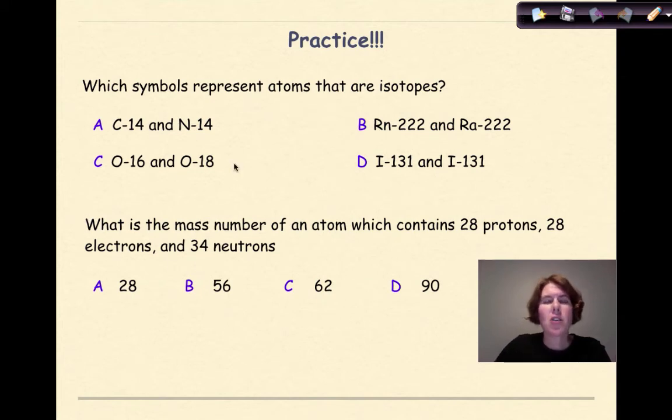Welcome back. Let's go over these two examples. Which symbols represent atoms that are isotopes? Like we said before, with isotopes, the number of protons has to be the same. The number of neutrons has to be different. So which one has the same atomic number?